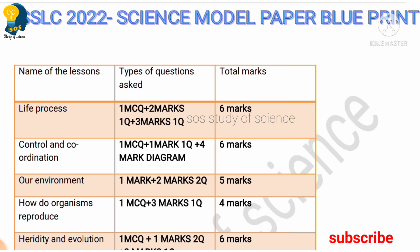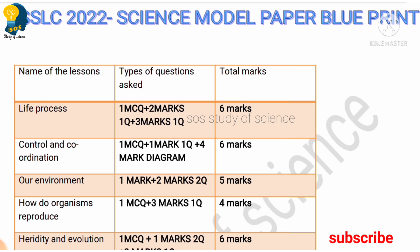Moving to the next lesson, Control and Coordination — for this lesson also they have totally allotted six marks. Out of six marks in the model question paper, there is one MCQ, one one-mark question, and one four-mark diagram question. So totally six marks has been allotted for Control and Coordination.